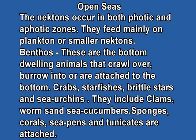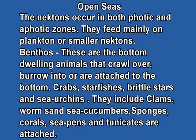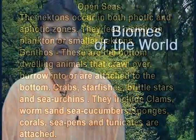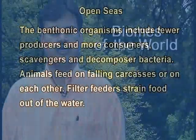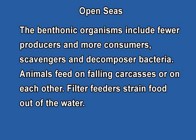Nekton feed mainly on planktons or smaller nekton. The third category is benthos. These are bottom-dwelling animals that crawl over, burrow into, or attach to the bottom. Crabs, starfishes, brittle stars, and sea urchins are commonly found there. You can also find clams, worms, sand sea cucumbers, sponges, corals, sea pens, and tunicates. The benthic organisms include primary producers and consumers. They also include decomposing bacteria. Animals feed on falling carcasses or on each other, and a fierce competition goes on in the seawater. Filter feeders strain food out of the water.